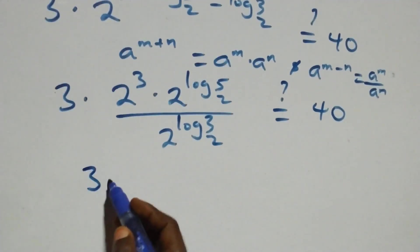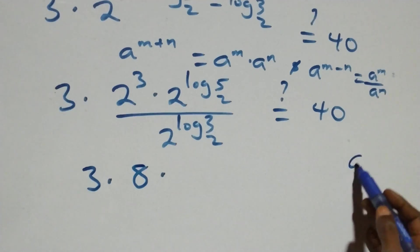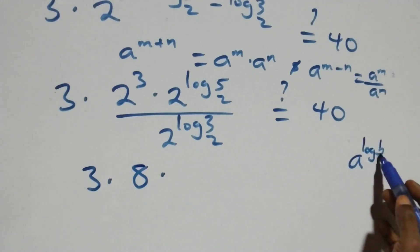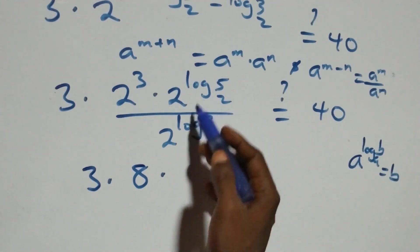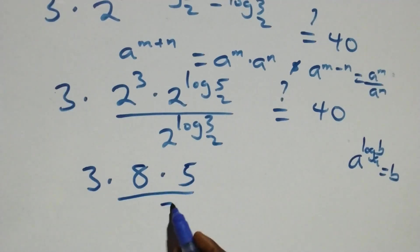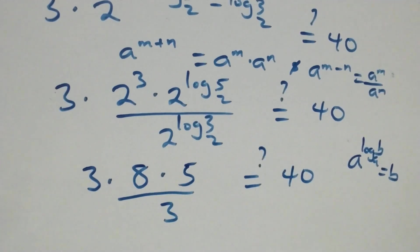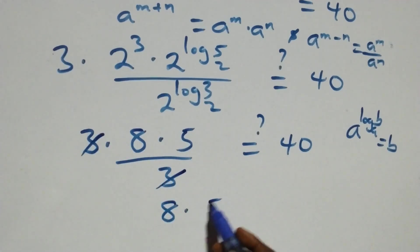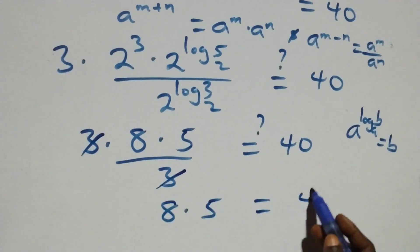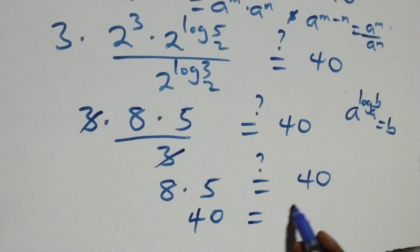We have 3 times 2 raised to power 3, that's 8. Then we apply the identity a raised to power log base a of b equals b. So 2 raised to power log 5 base 2 gives 5, and divided by 2 raised to power log 3 base 2 gives 3. This simplifies to 3 times 8 times 5 over 3. The 3's cancel, leaving 8 times 5 equals 40, which equals 40 on the right side.